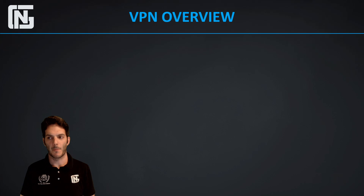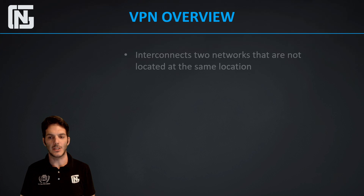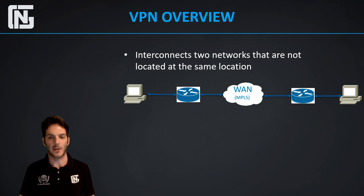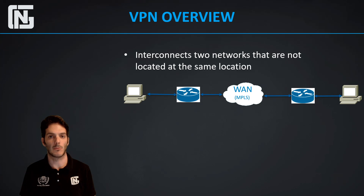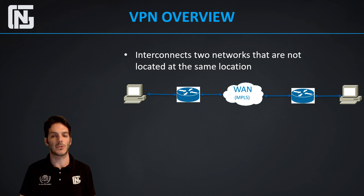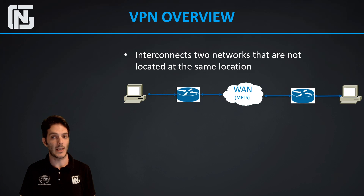Now let's take a look at the VPN overview. Logically, what the VPN is designed to do is interconnect two networks that are not located at the same location. We have the traditional WAN model where we have WAN connectivity — regardless of the underlying transport — demonstrated here with MPLS, or multi-protocol label switching. We have two routers, one on each side of the WAN cloud, connecting to the WAN, with an endpoint such as a PC behind each router.